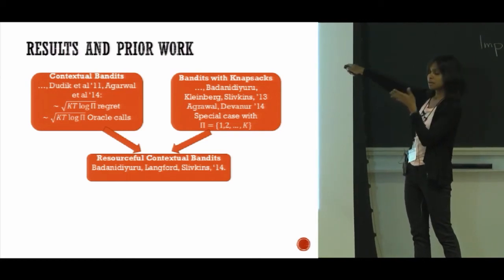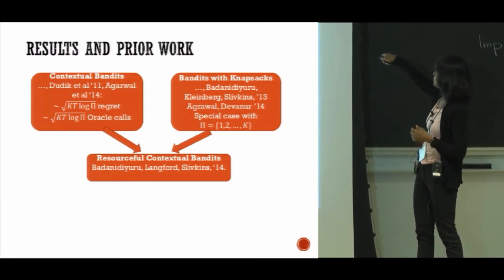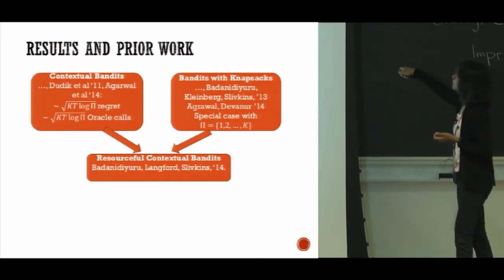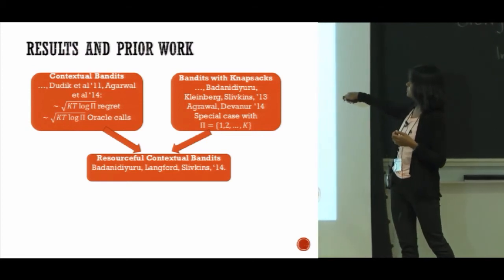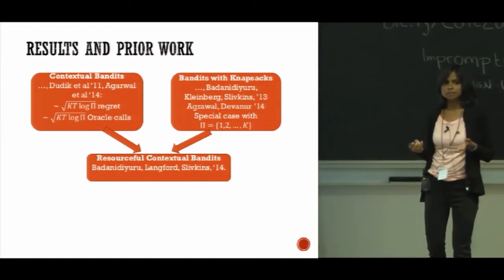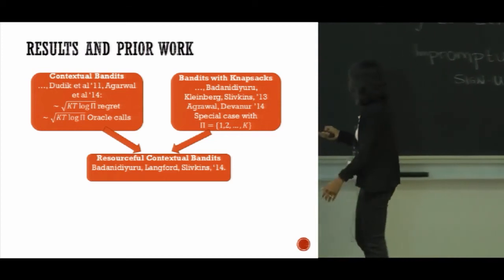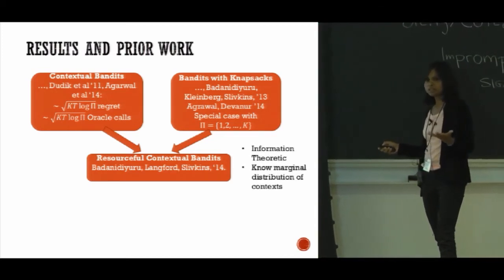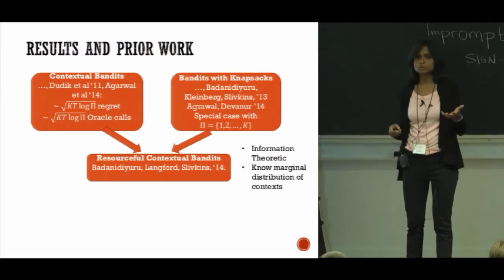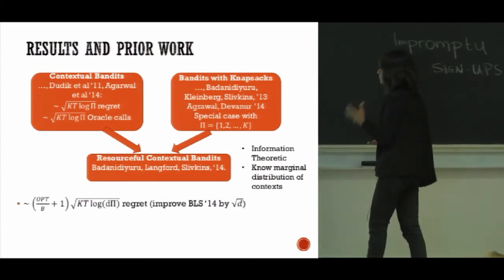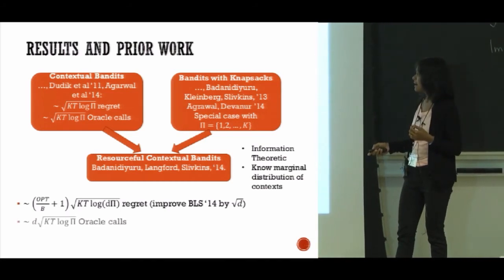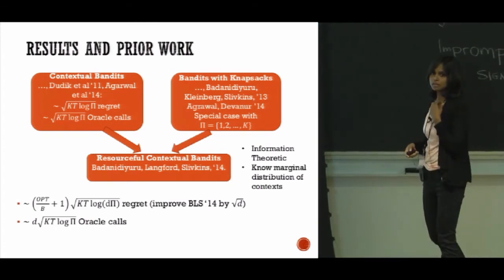In bandits with knapsack—that is with knapsack constraints but without context—the work by Badanidiyuru, Kleinberg, and Slivkins and another work by me and co-author Nikhil Devanur achieve near optimal regret bounds. The closest paper to our work is this one here which combines these two and essentially achieves near optimal regret bounds for contextual bandits with knapsacks. The main drawback of this work is that it is essentially an information theoretic result. It achieves the regret bound but the algorithm has very large running time and it also needs to know the marginal distribution of the context vectors. Essentially our work closes this problem by achieving close to what can be achieved without constraints and also making the number of calls to be log in the policy space.